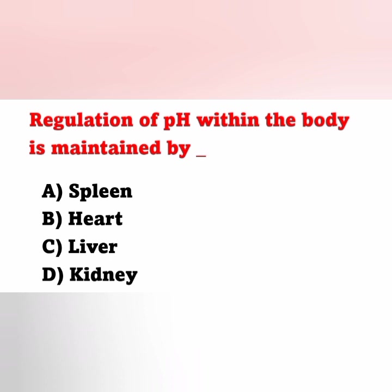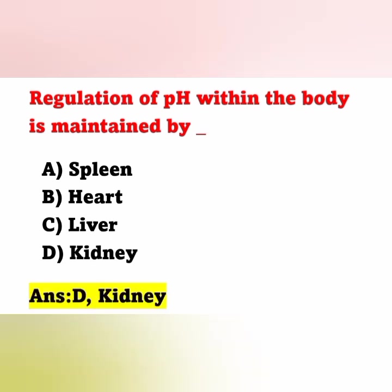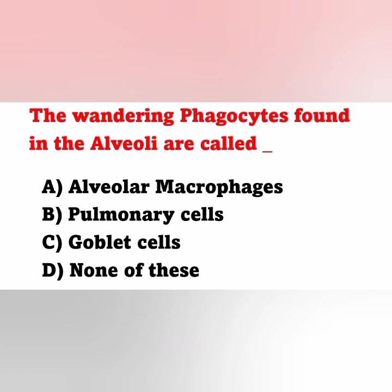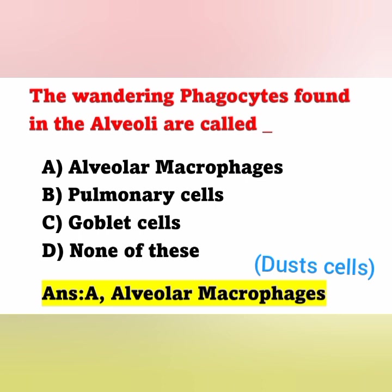Next question: regulation of pH within the body is maintained by — Option A: spleen. Option B: heart. Option C: liver. Option D: kidney. pH is maintained by the kidney. Next question: the wandering phagocytes found in the alveoli are called — Option A: alveolar macrophages. Option B: pulmonary cells. Option C: goblet cells. Option D: none of these. The correct answer is Option A — alveolar macrophages, also called dust cells, are phagocytic cells found in the pulmonary alveoli.